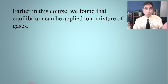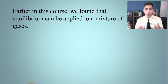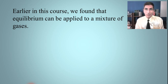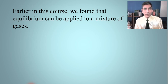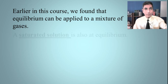Earlier in this AP Chemistry course, we learned that if you have a mixture of gases, there's this thing called equilibrium, where at some point the rate of the forward reaction is going to be equal to the rate of the reverse reaction, and you'll be able to calculate an equilibrium constant.